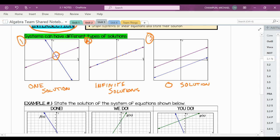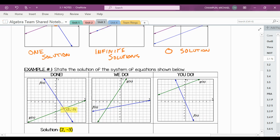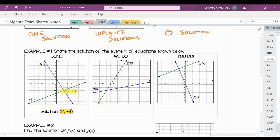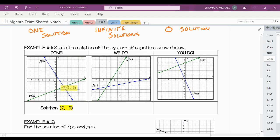Okay, that kind of makes sense. Well, let's do a couple examples here. All right, example one. State the solution of the system of equations shown below. Look at the first one. Already done. And look where the f(x), the blue f(x) line, and the green g(x) line intersect. And it intersects at the point (2, -3).